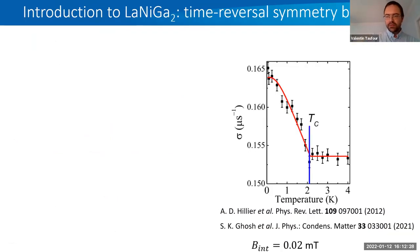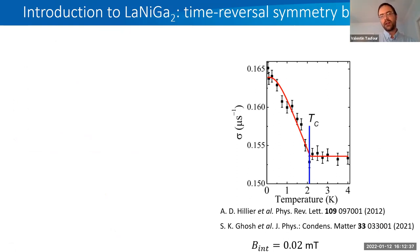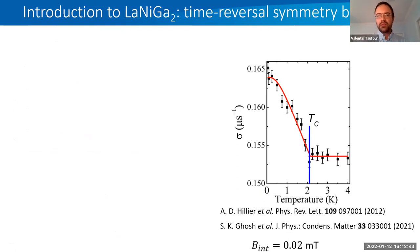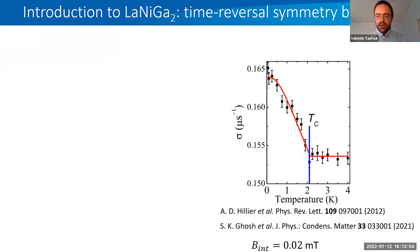But the situation changed in 2012 when Hillier and collaborators performed muon spin rotation measurements. They found an increase of the spin relaxation rate below Tc, indicating that the superconducting state breaks time-reversal symmetry. They found an internal field of about 0.02 millitesla.